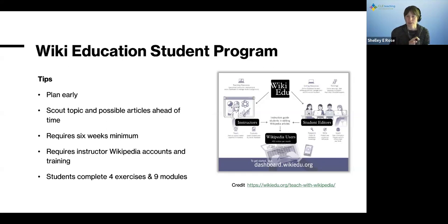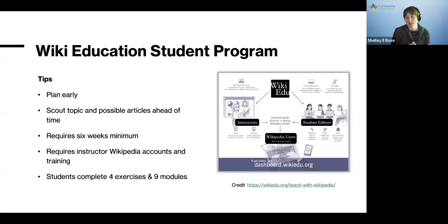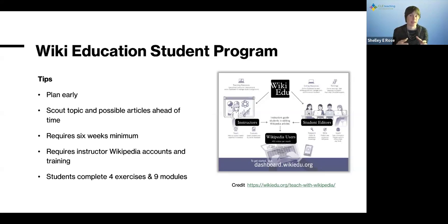A few tips on what we wish we knew about Wikipedia and the Wiki Education student program. Number one: plan early. Do not approach your librarian the week before the semester starts. Scout the topic and possible articles ahead of time — this was really critical to our success, having a pre-chosen group of articles that matched the course content.